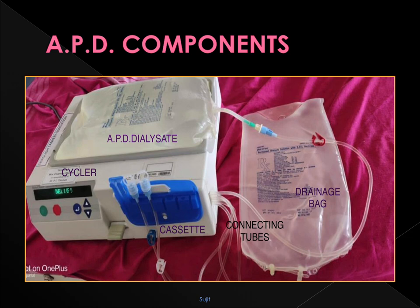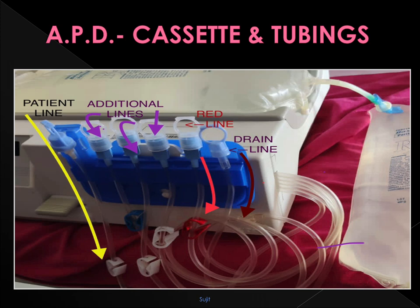In automated peritoneal dialysis, we use a cycler for doing dialysis. In CAPD, the patient or attendant does the exchange procedure. The components include a cycler, a cassette, connecting tubes, a drainage bag, and an APD dialysis solution of around 6 to 7 liters of fluid. The cassette tubing: the first line from the right is the drain line going to a separate drain bag; the second line (marked red) goes to the APD bag above the cycler; subsequent lines are additional dialysis lines for subsequent bags; the last line is the patient line going to the patient catheter.